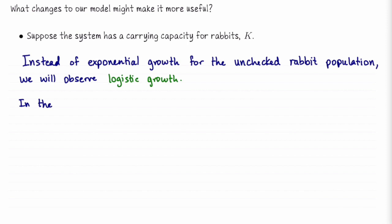So in the absence of foxes, what would the equation for dr/dt look like? We'll keep using the same parameter a out front. To set this up as a population that has a carrying capacity, we can do a times r times the quantity 1 minus r divided by k, where k is the carrying capacity.